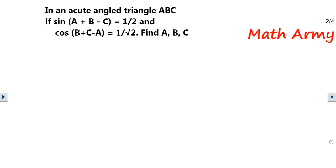Hi guys, welcome to my channel Math Army. In an acute angle triangle ABC, sine(A+B-C) equals 1/2 and cos(B+C-A) equals 1/√2. Find A, B, C. This question is from trigonometry and I haven't seen this kind of question in the recent past. One of the students asked and I thought of making a video. I've practiced a couple of times before making this video, so I want your complete attention here.